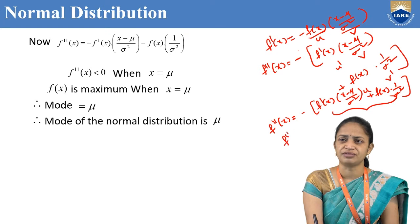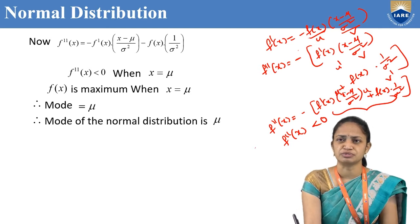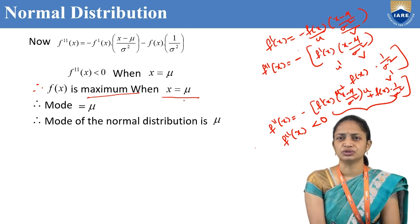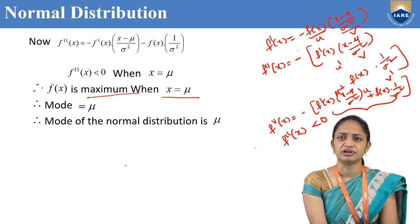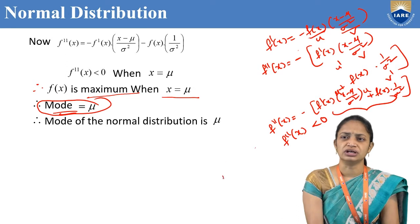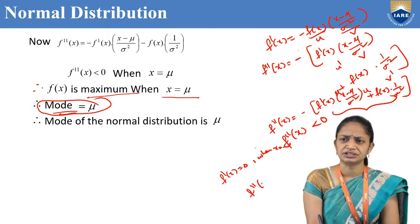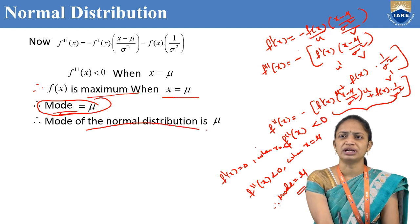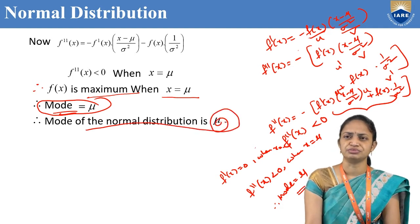F''(x) is less than 0 when x = μ, because substituting x = μ makes the first term zero and the second term −F(μ)/σ² is negative. Therefore F(x) is maximum when x = μ. Hence mode = μ, because F'(x) = 0 and F''(x) < 0 when x = μ. The mode of the normal distribution is μ.